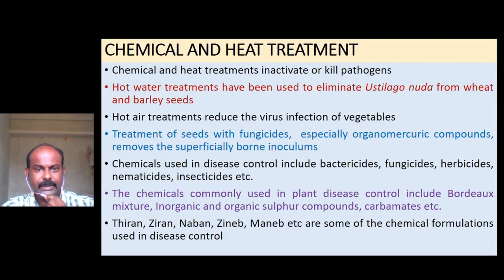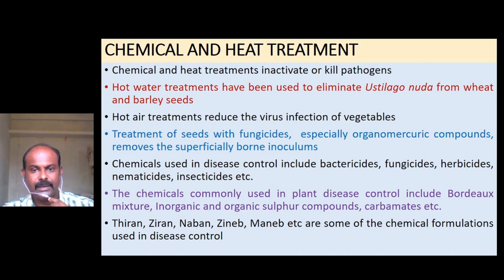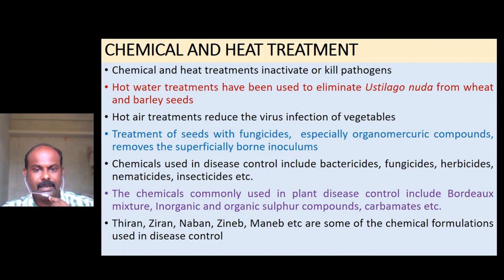Chemical and heat treatment inactivates or kills pathogens. Hot water treatments have been used to eliminate Ustilago nuda from wheat and barley seeds. Hot air treatments reduce virus infection of vegetables. Treatment of seeds with fungicides, especially organo-mercury compounds, removes superficially borne inocula. Chemicals used in disease control include bactericides, fungicides, herbicides, nematicides, and insecticides. Commonly used chemicals include Bordeaux mixture, inorganic and organic sulphur compounds, carbamates, thiram, ziram, nabam, zineb, maneb, etc.